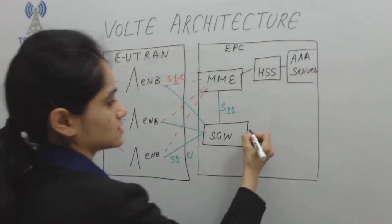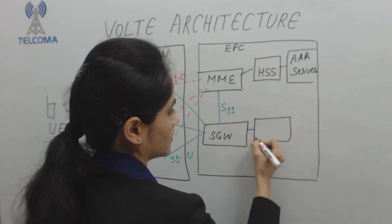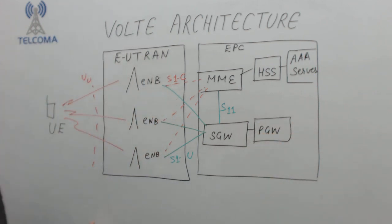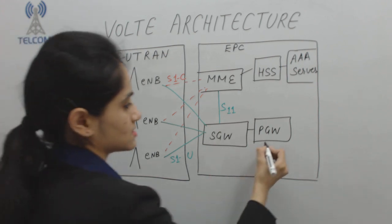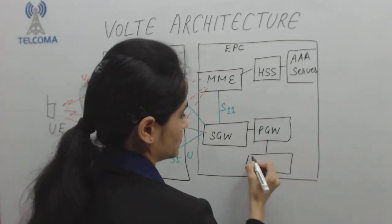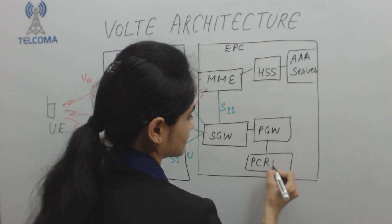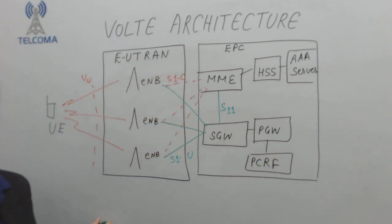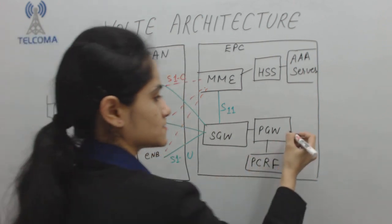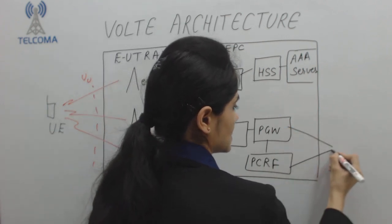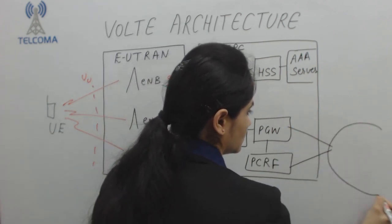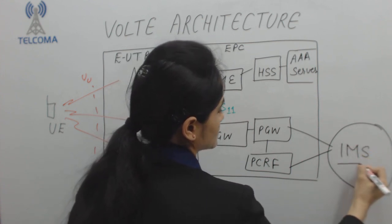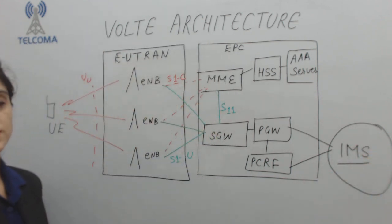In this part, we also require the PGW — PDN Gateway — which is attached to the PCRF (Policy Control Rule Function). This PGW and PCRF are connected to the IMS network system, which is specifically qualified for VoLTE.